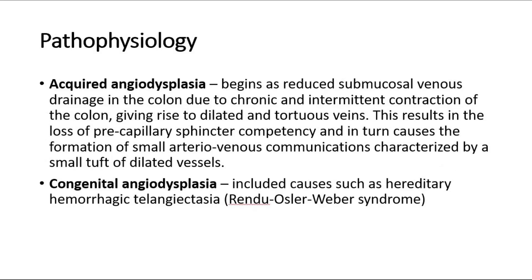Angiodysplasia can be divided into acquired or congenital. Acquired angiodysplasia begins as reduced submucosal venous drainage in the colon due to chronic and intermittent contraction of the colon, giving rise to dilated and tortuous veins. This results in the loss of precapillary sphincter competency and in turn causes the formation of small arteriovenous communications, characterized by a small tuft of dilated vessels.